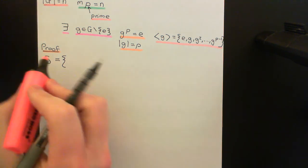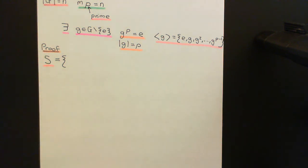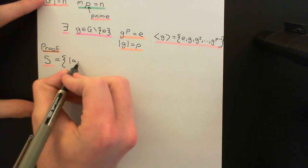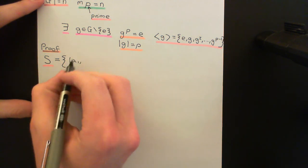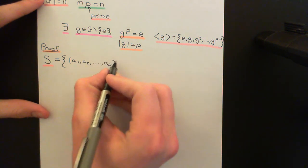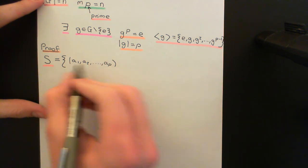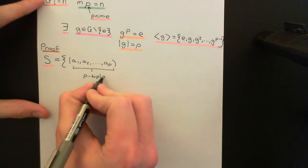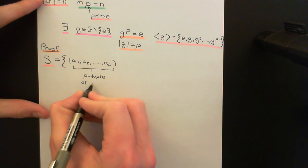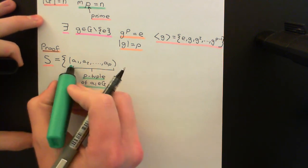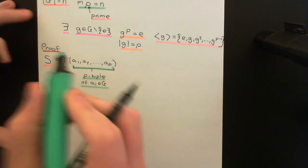The set S is defined to be the set of all p-tuples of elements from the group: (a₁, a₂, ..., aₚ), where each aᵢ is an element of G. So you look at all p-tuples of elements of the group such that they obey an interesting criterion.